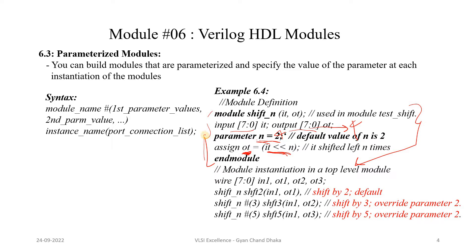Now here if you see, we have a parameter. When I am instantiating this module, I will write the module name, then a user-defined instance name, and here we have input and output. If I instantiate this module — which is a parameterized module — like this, the default parameter in this module has a value of 2.